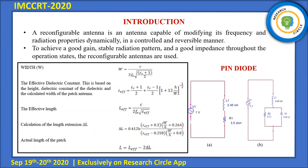Coming to the introduction, we have designed a reconfigurable microstrip antenna. A microstrip antenna has three layers: the patch, the ground, and the substrate. It is very important what material of substrate we choose for the antenna design, because each substrate has its own dielectric constant. The patch and the ground are the radiating metals, and the substrate is a dielectric material. A reconfigurable antenna is capable of modifying its frequency as well as its radiation properties dynamically.